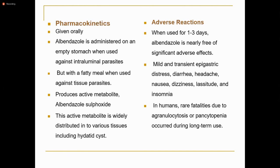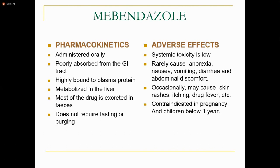The second drug is mebendazole. Its mechanism of action is the same as albendazole — it inhibits the beta-tubulin structure, impairing glucose uptake by the parasite. Without energy, the parasite is immobilized and slowly dies. Mebendazole and albendazole share the same mechanism of action.